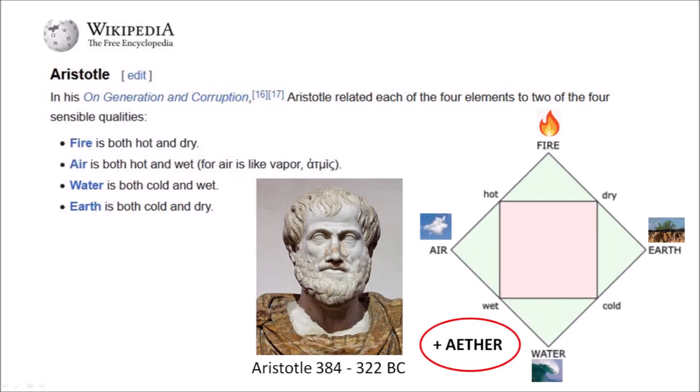In order to make this presentation more interesting, we are going to go back in time about 2,400 years. Aristotle was a Greek philosopher who lived from 384 to 322 BC. His writings cover a broad range of subjects spanning natural sciences, philosophy, linguistics, economics, politics, psychology, and the arts.